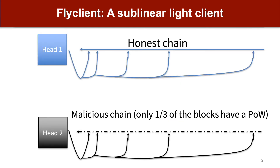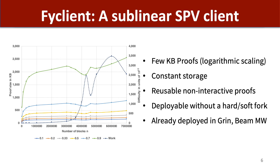We introduced FlyClient, which is a super light client that only needs to download and check a logarithmic number of block headers. It does this by sampling random blocks and detecting a malicious chain with arbitrarily high probability. FlyClient proves only a few kilobytes in size, and FlyClient has already been deployed in several public blockchains.